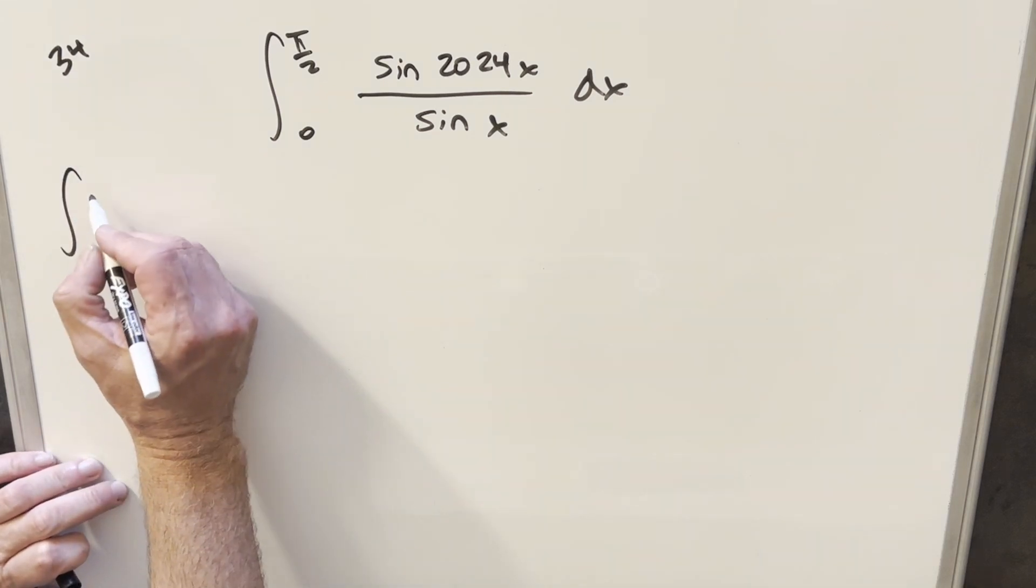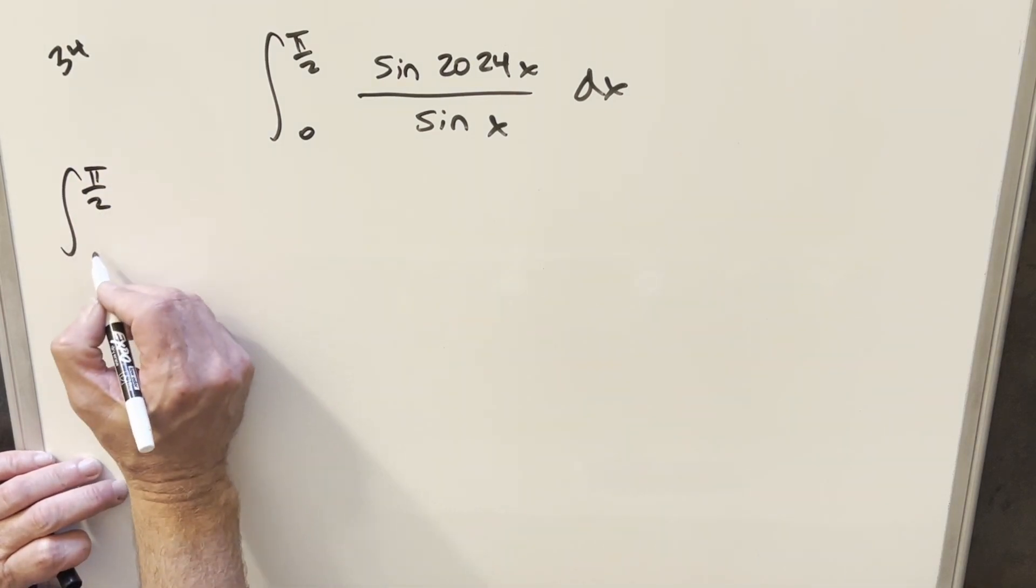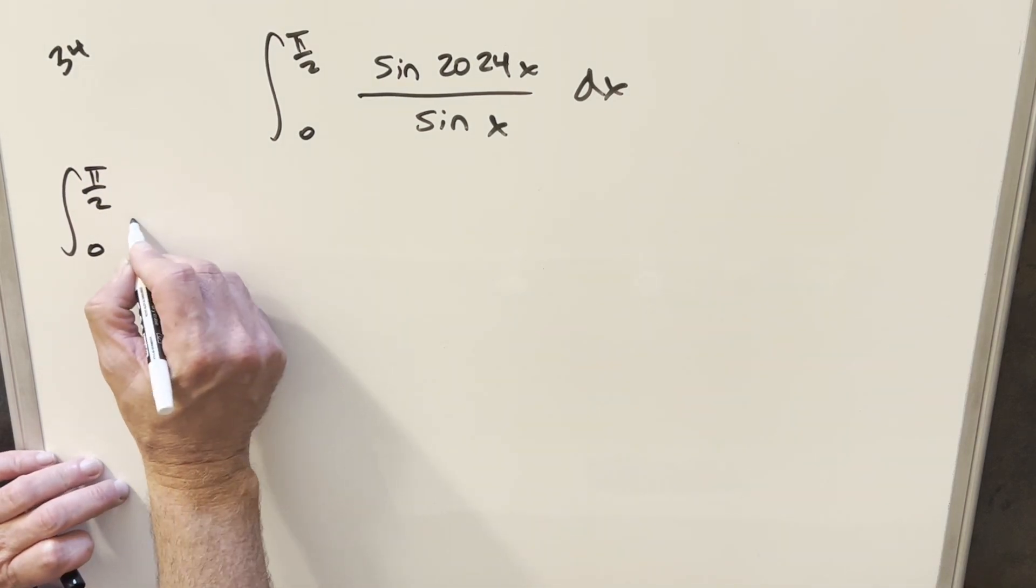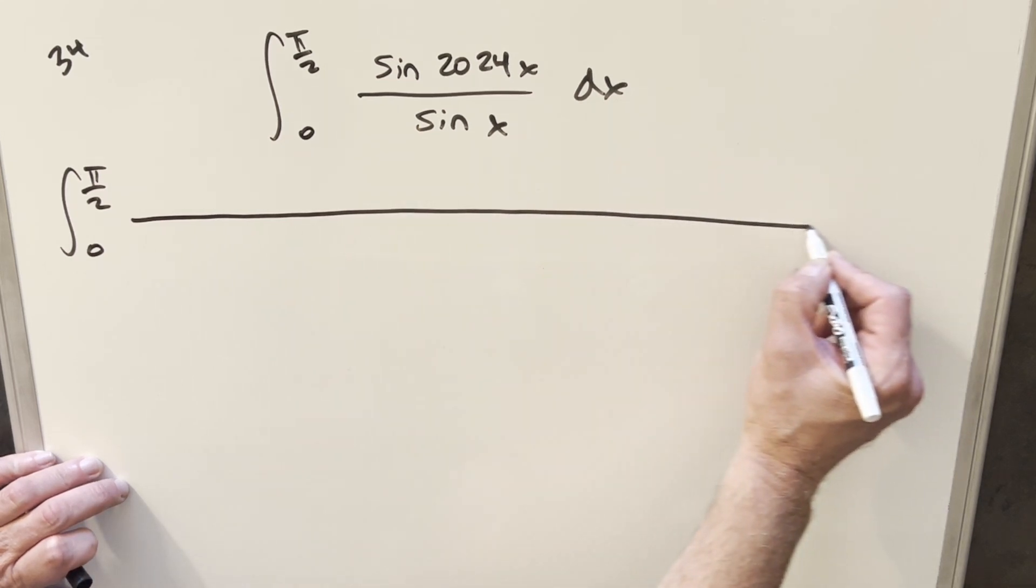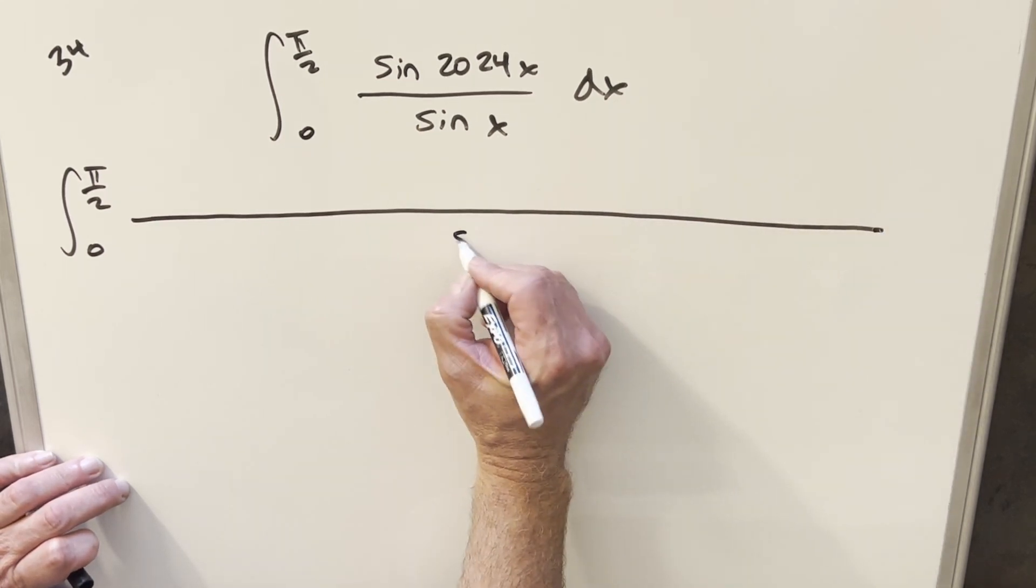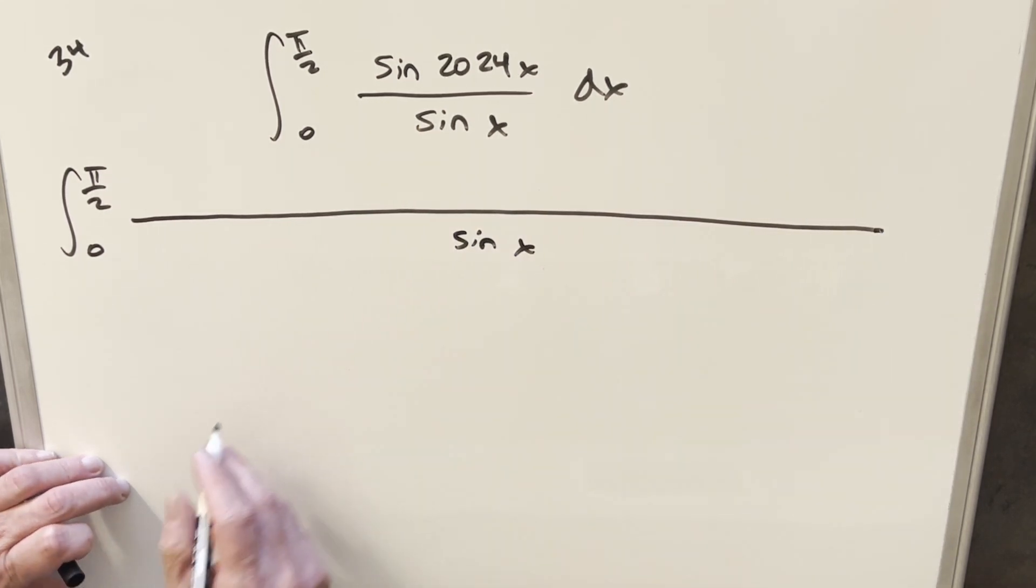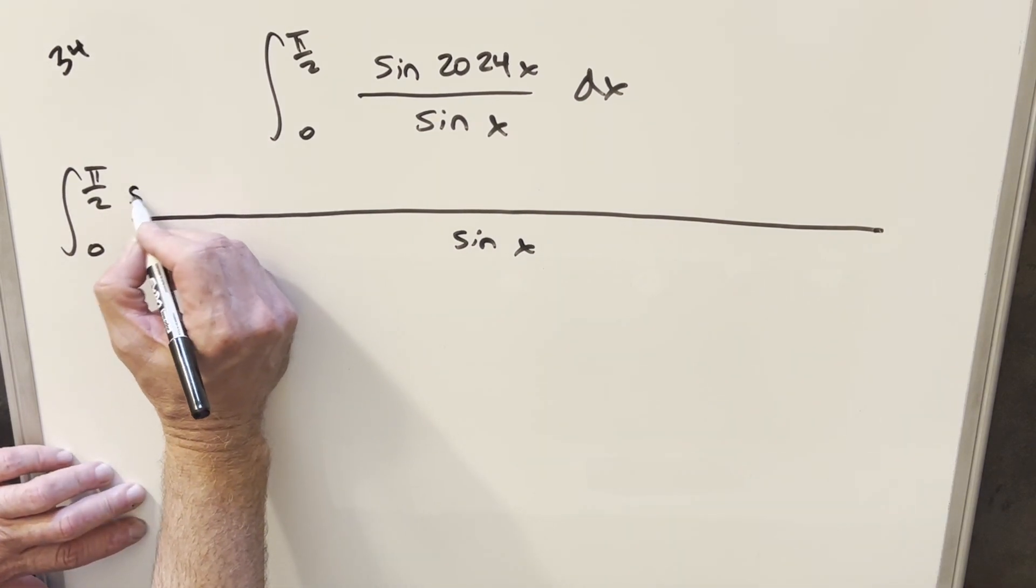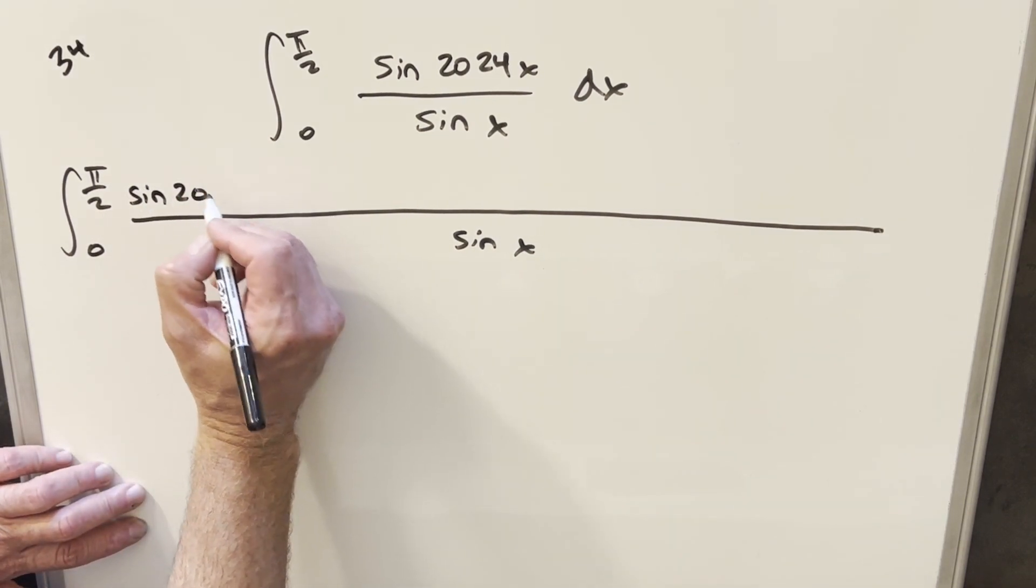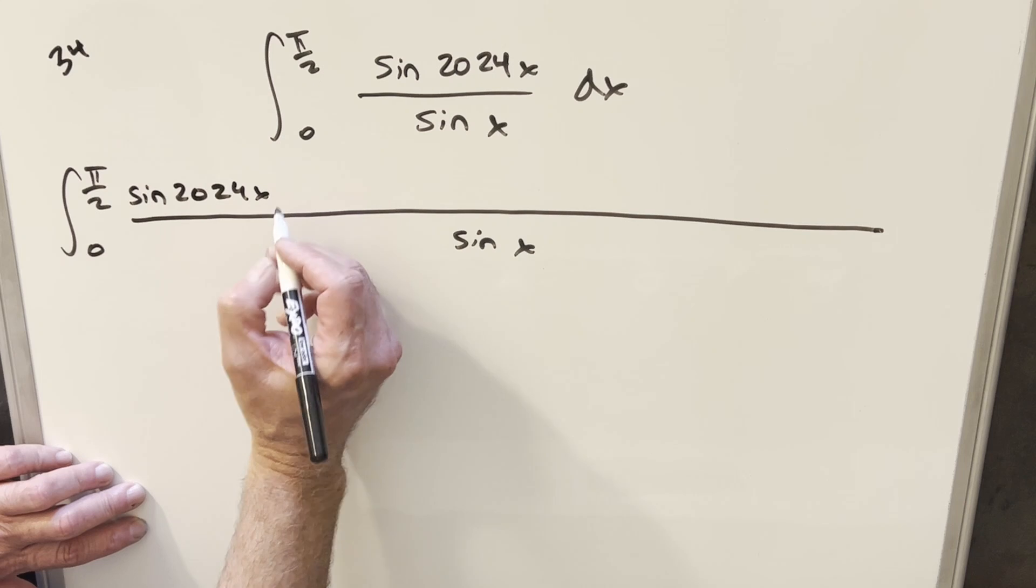So to get started with this, what I want to do is basically create a lot of space, and you'll see why in a second, because there's going to be a lot of terms. So we'll create a really long fraction, and what they did with this is they started creating terms. So we have 2024x.